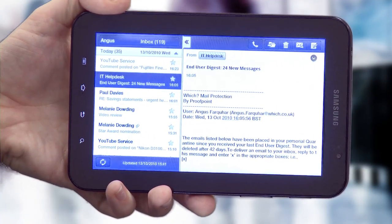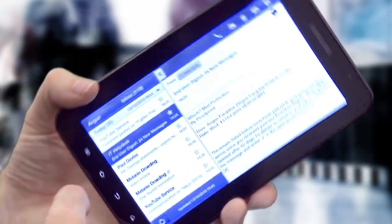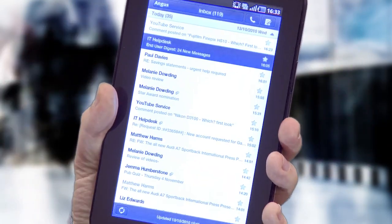If you hold it in the landscape position when in your emails, you'll have your list of emails on the side with a preview of the email on the right, which is rather nice.